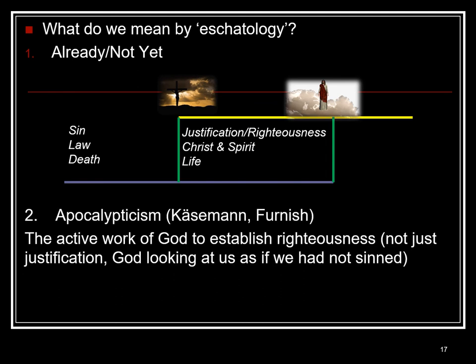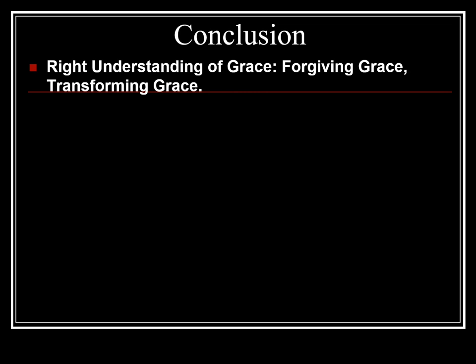We can look at it this way: we have this age and the age to come overlapping. Sin, law, and death are characteristics of this age, and justification or righteousness, Christ in the Spirit, and life are characteristics of the age to come — but they are already present in this overlap of the ages. So it's apocalyptic and eschatological; the heuristic key is God's inbreaking power into this age. Apocalypticism for Käsemann and Furnish has to do with the active work of God to establish righteousness, not just justification as God looking at us as if we had not sinned. So in conclusion, we need a right understanding of grace — it's both a forgiving grace and a transforming grace.